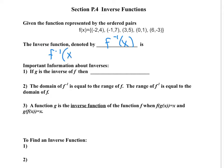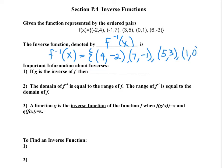So f inverse is going to be the set of ordered pairs: 4, negative 2; 7, negative 1; 5, 3; 1, 0; and negative 3, 6. The inverse function is simply reversing the x and the y coordinates.